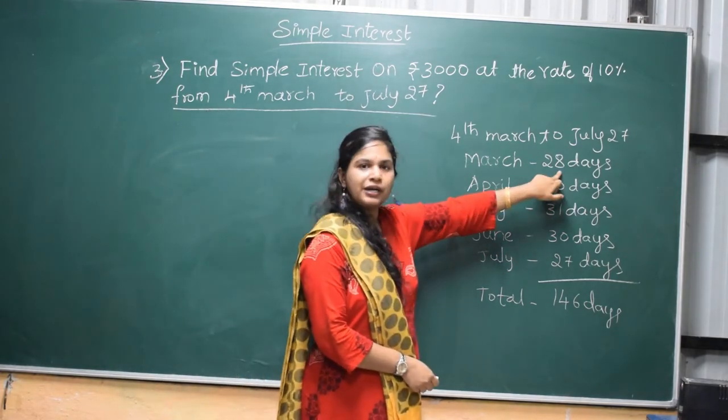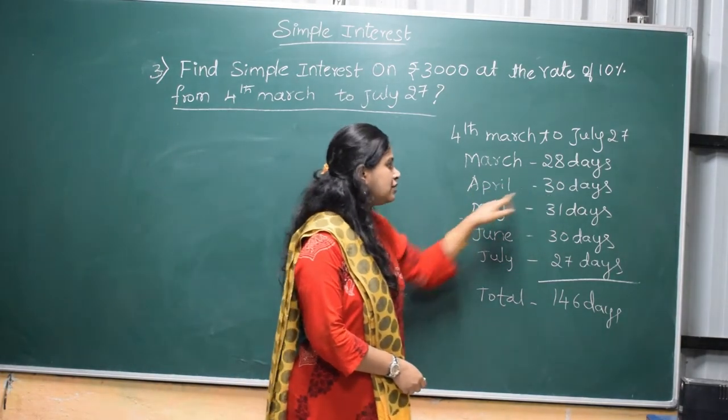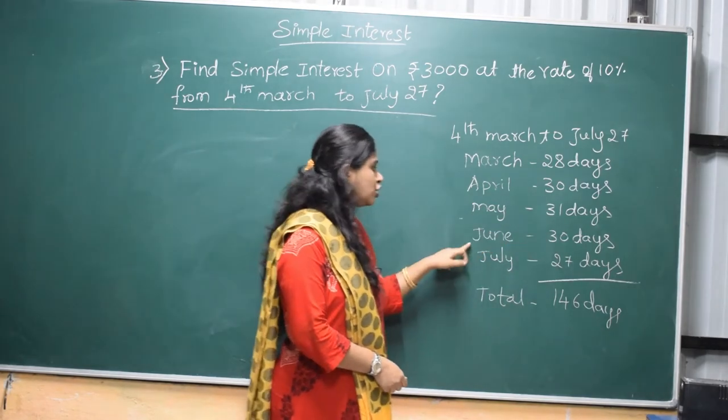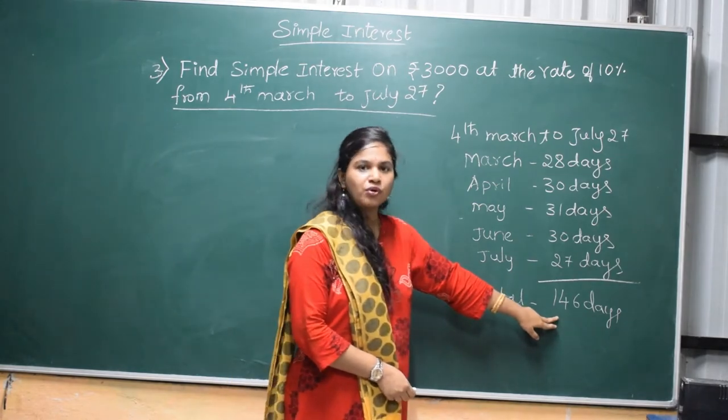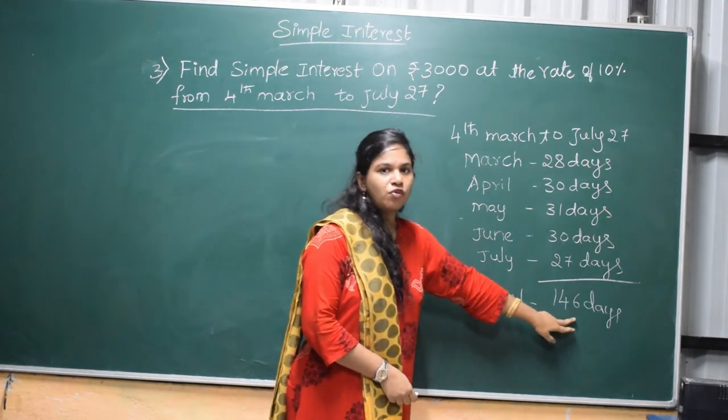In March, we have to take only 28 days. April, 30 days. May, 31 days. June, 30 days. July, 27 days. Total all these days, we have to calculate, we will get 146 days.